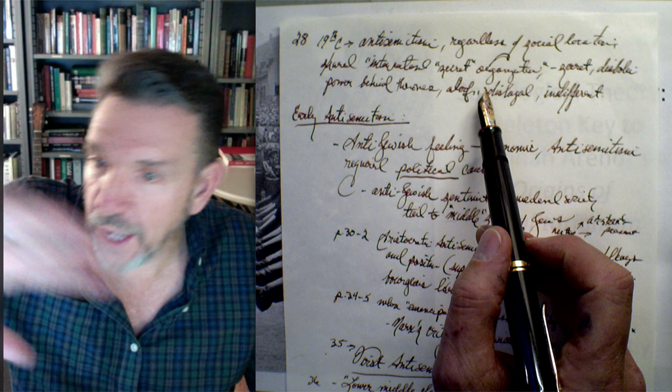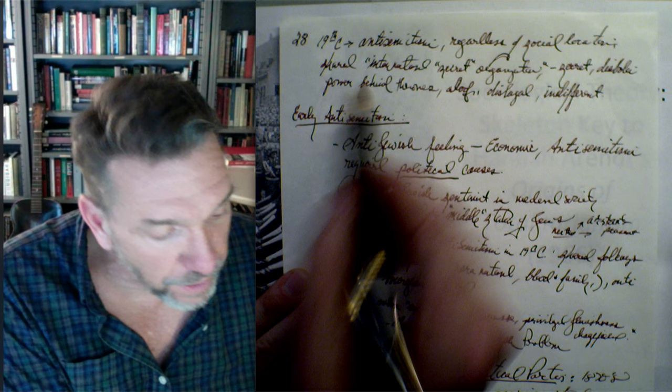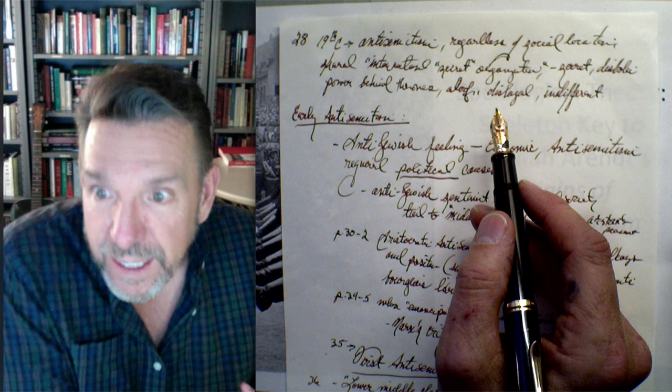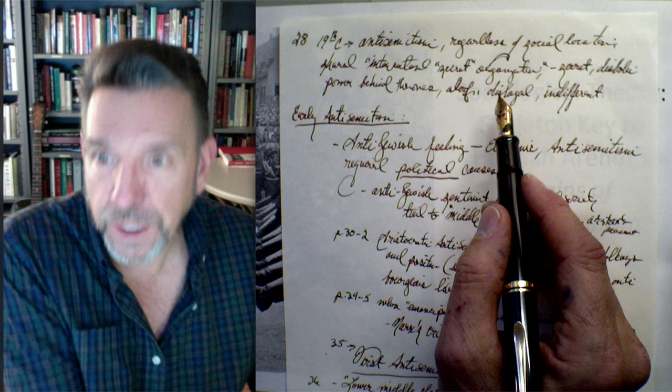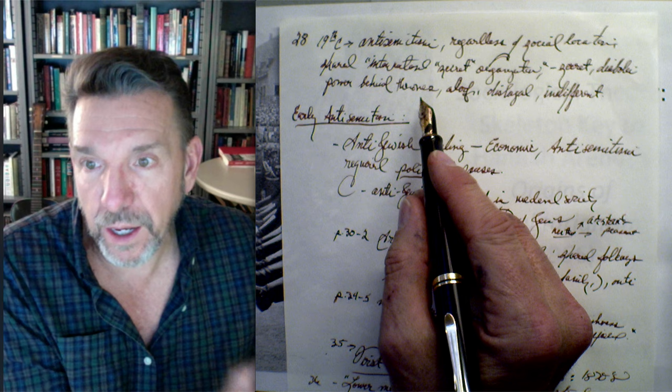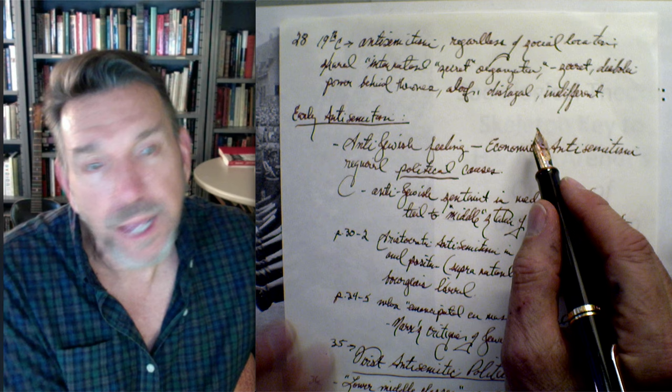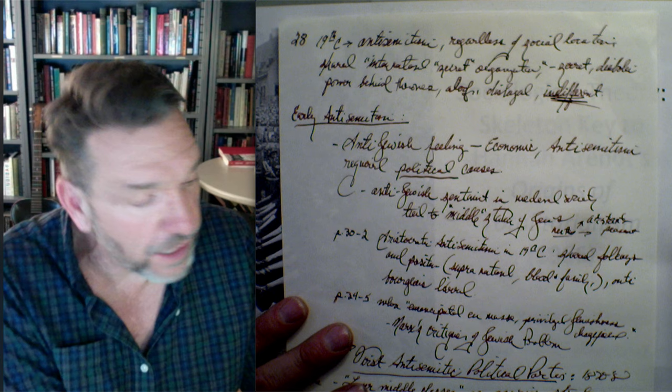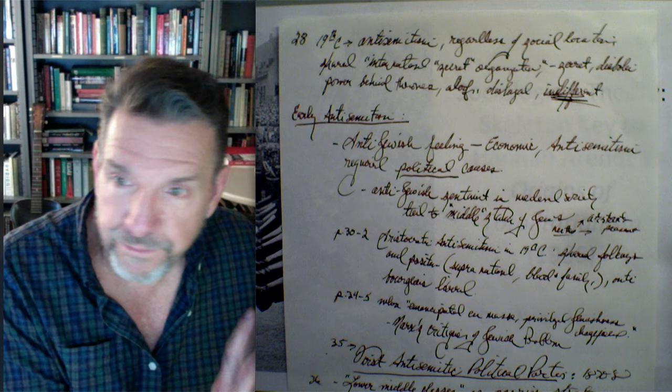On page 28, 19th-century antisemitism across all different social locations shared a set of common motifs: Jews were always portrayed as international, secretive, highly organized, a diabolical power behind the scenes, aloof, disloyal, unpatriotic, a-national, treasonous, indifferent to the fate of nations, grasping — and, as the Fuchs images showed, associated with sexual deviance and other projected characteristics.